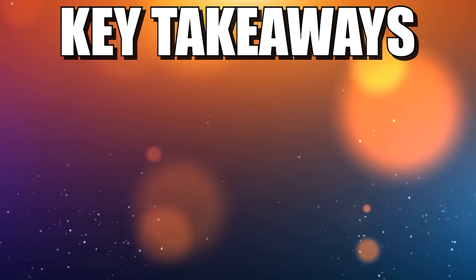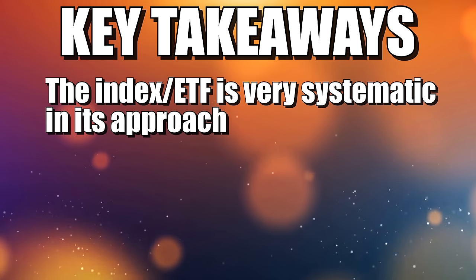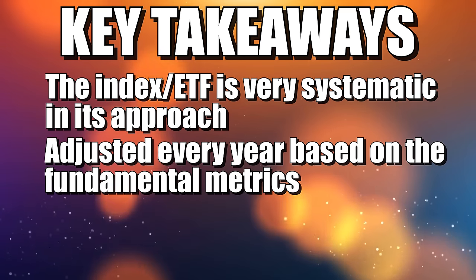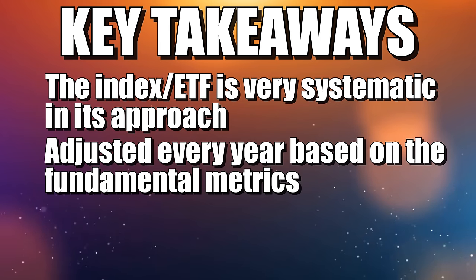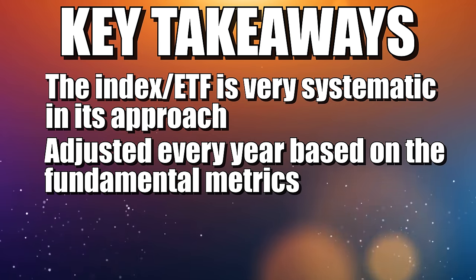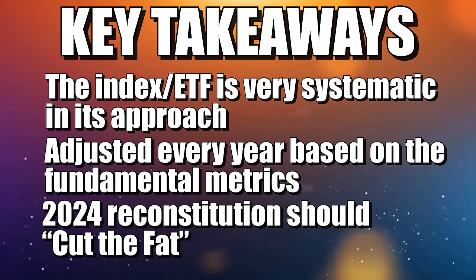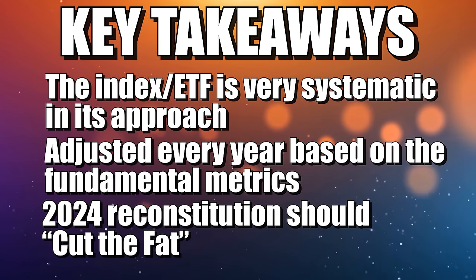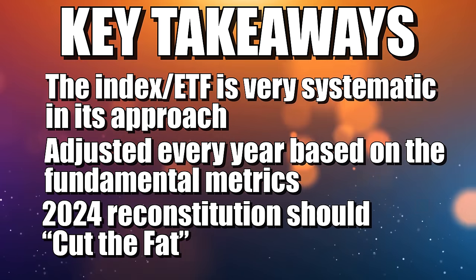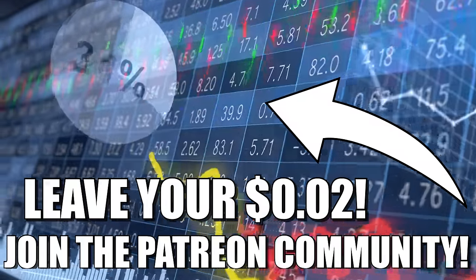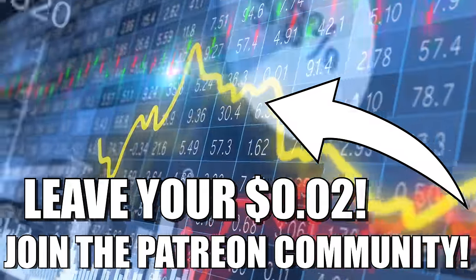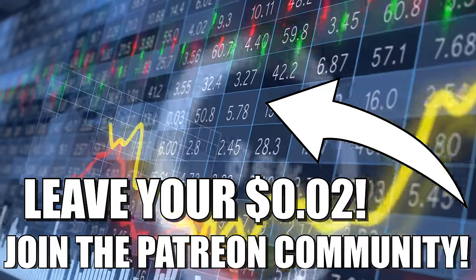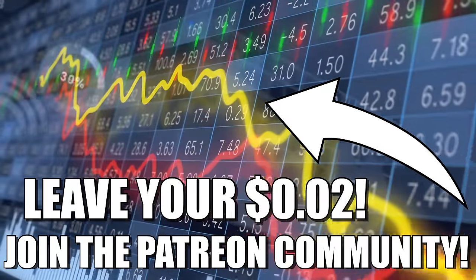This ETF is very systematically put together — it is reconstituted on an annual basis with no regard given to public perception of a stock; it's very fundamentals-based on dividend growth rate, dividend yield, cash to total debt, etc. This means every year they have the opportunity to cut the fat, so we should see dramatically underperforming stocks cut from the index next year. We'll make a note to look at the reconstitution of SCHD when it occurs in March 2024. Hopefully you found some value in this video — leave your two cents in the comments below, and this spreadsheet is available to Patreon community members. Have a great rest of your day and thanks for watching.